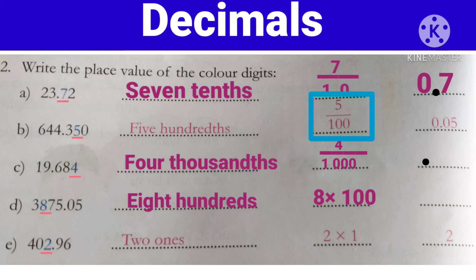Now next one — 5 by 100. Ab bataiye, numerator mein kitnay numbers hain? 1. Denominator mein hum 1 number ko cancel karenge — number 5 hai. Toh 1 ko cancel karenge. Toh kitnay zeros bache hain? 2 zeros. Toh woh 2 zeros ko hum numerator ke 5 ke saath likhenge — yani 0.05.